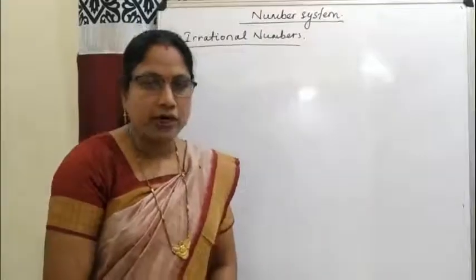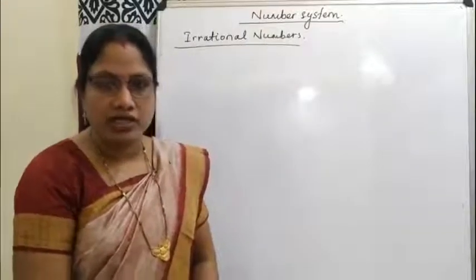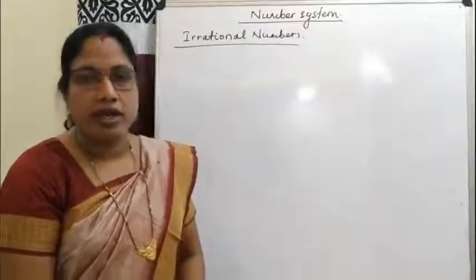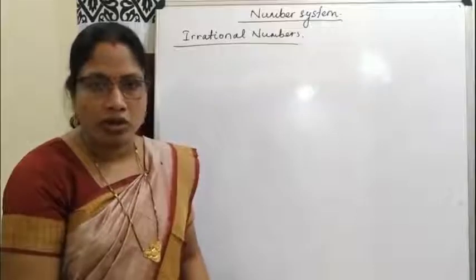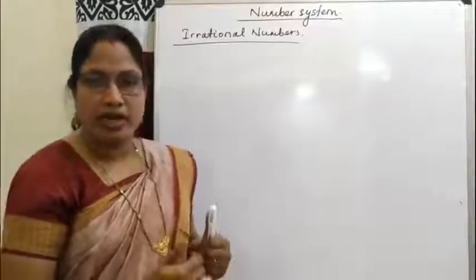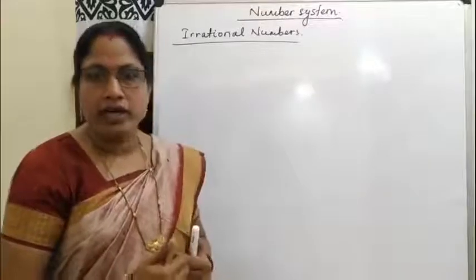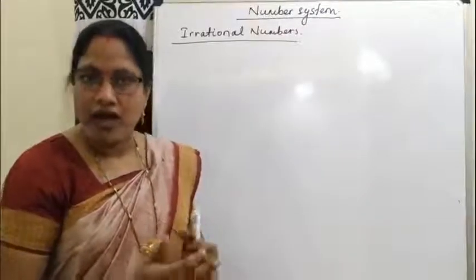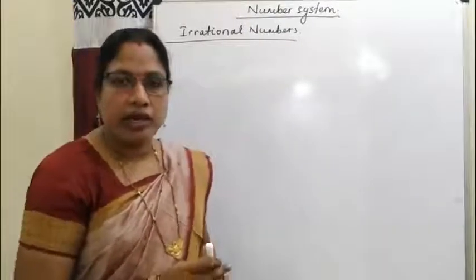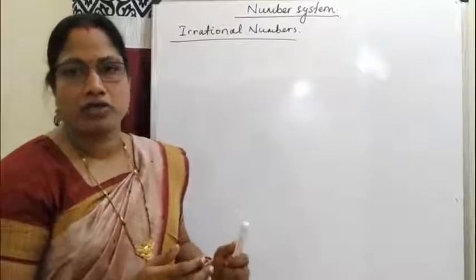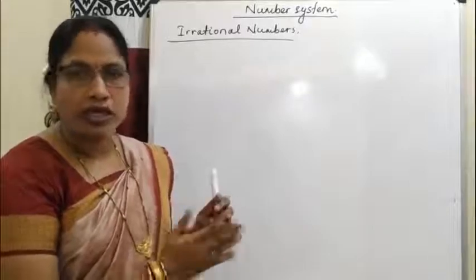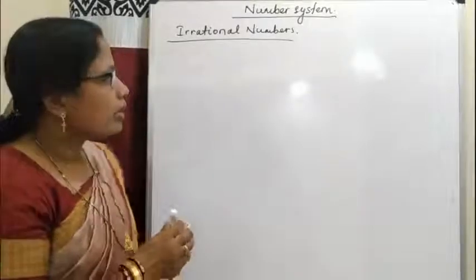Dear students, in our last class we discussed the number system you learned in earlier classes — like natural numbers, whole numbers, integers and rational numbers. So a question arises in our mind: is there any number left after rational numbers in our number system? Yes, there are infinitely many numbers left after rational numbers. What are those numbers?